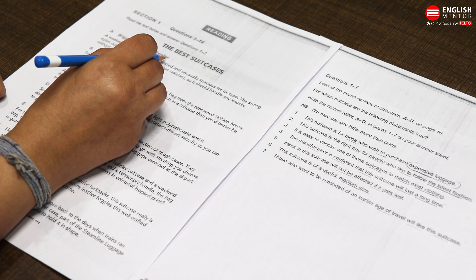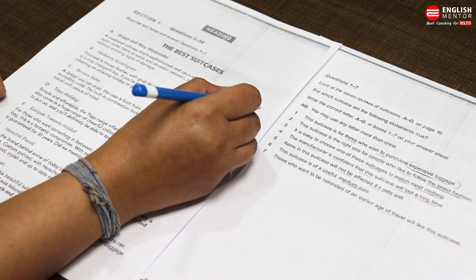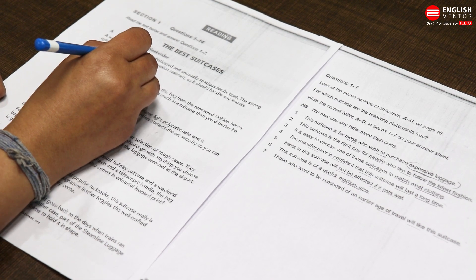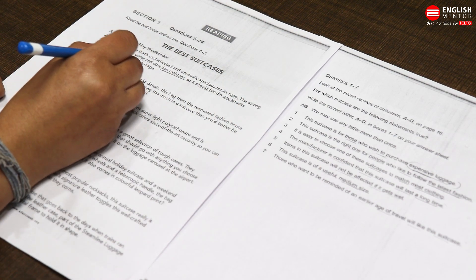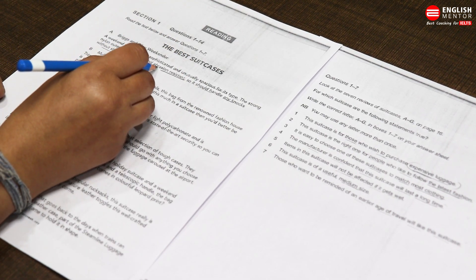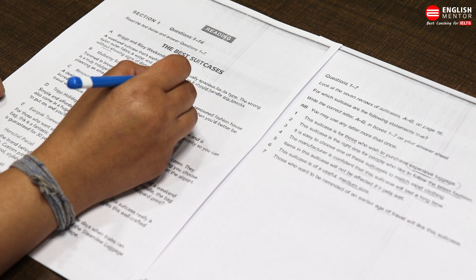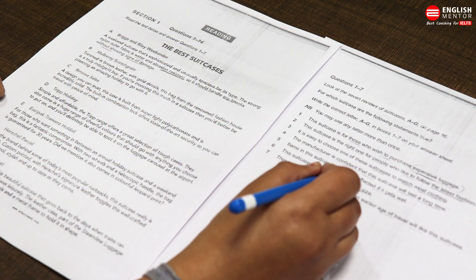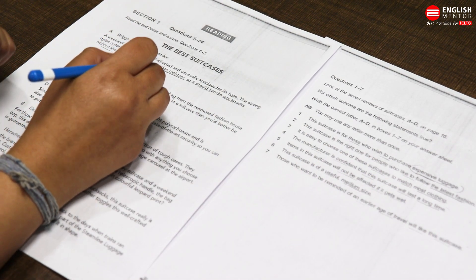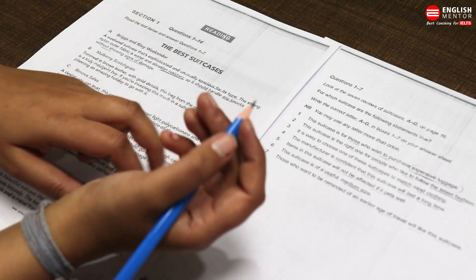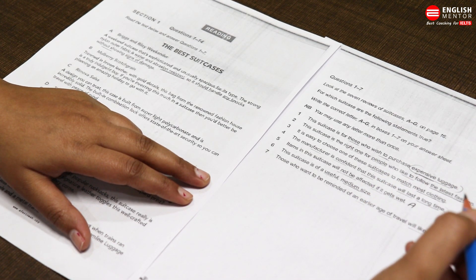It's very easy to remember keywords: ek expensive dhundna hai humein, ek latest fashion ke liye, ek clothing ke saath match karna hai, ek durability factor dekhna hai, ek resistance par dekhna hai ki will not be affected. Question six mein keyword ko dhyan mein rakhna hai ki medium size hai aur useful ke baare mein baat ho rahi hai. Paragraph A: Bricks and Relay Weekender. A weekend suitcase that is sophisticated and usually spacious for its type. The strong nylon outer fabric is water and abrasion resistant, so it should handle any knocks without showing signs of damage. So yeh koi bhi sign of damage nahi show karega, is par resistance hai. If we remember question number five: items in this suitcase will not be affected if it gets wet. So question number five ke liye jo hum mark karne ja rahe hain, that is A.